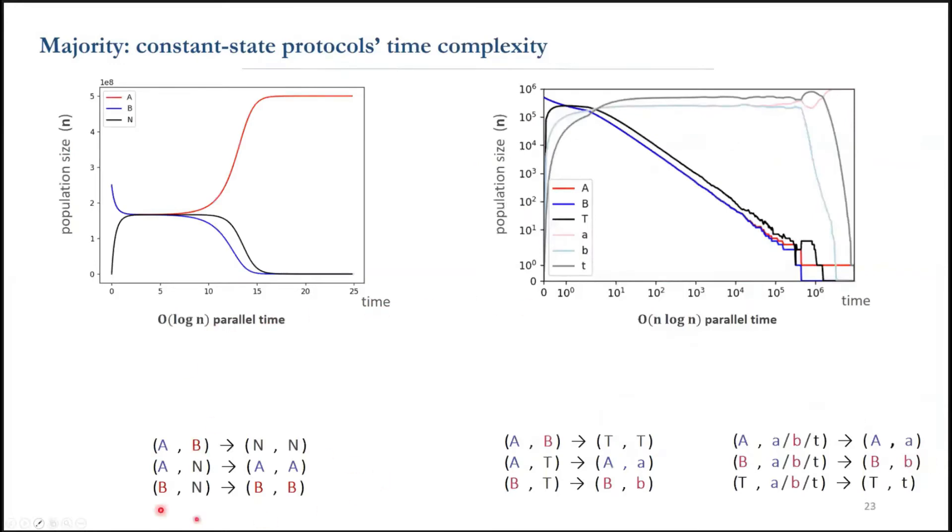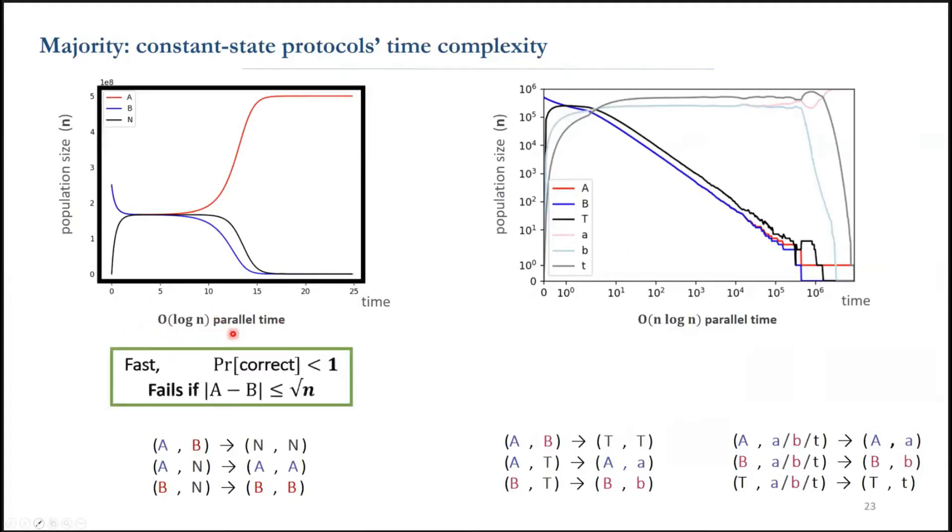Although these protocols solve the majority problem, both are not optimal in some senses. The first one works fast and takes log n time with high probability if the initial gap between agents in state a and b is large, but otherwise it doesn't.